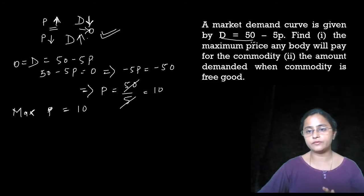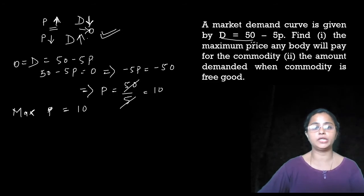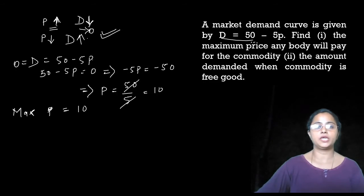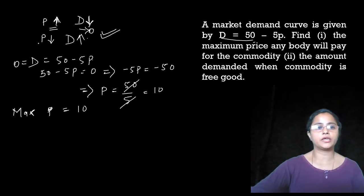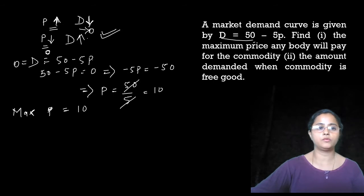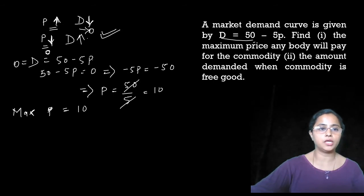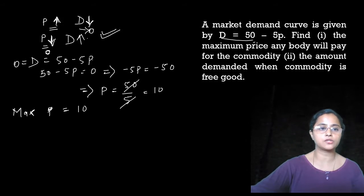Now the second part: the amount demanded when the commodity is free. Free means that the price will be zero. When the price decreases to zero, what will the amount demanded be?